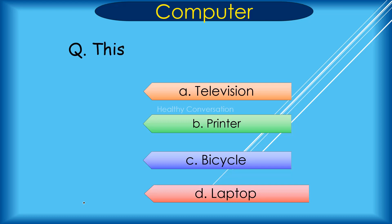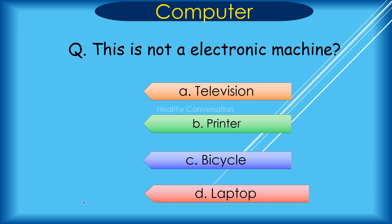Question: This is not an electronic machine. A. Television, B. Printer, C. Bicycle, D. Laptop. Correct answer is C. Bicycle.